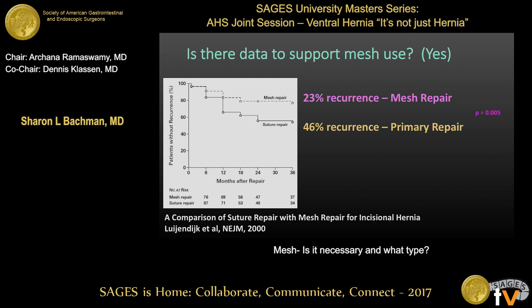Enter mesh, stage right. Will mesh fix our rate of incisional hernias? The most seminal study came from the Dutch group, who looked at two groups of 200 patients — 100 in each. One group had standard mass closure with one centimeter bites one centimeter apart. The other group underwent repair with a piece of standard heavyweight mesh at that time, with two to four centimeters of overlap, run to the posterior fascia but not fixated. Occasionally there was bridging. At two to three years out, patients who had mesh — even with this technique, which today we would not call gold standard — had their recurrence rate reduced by half.